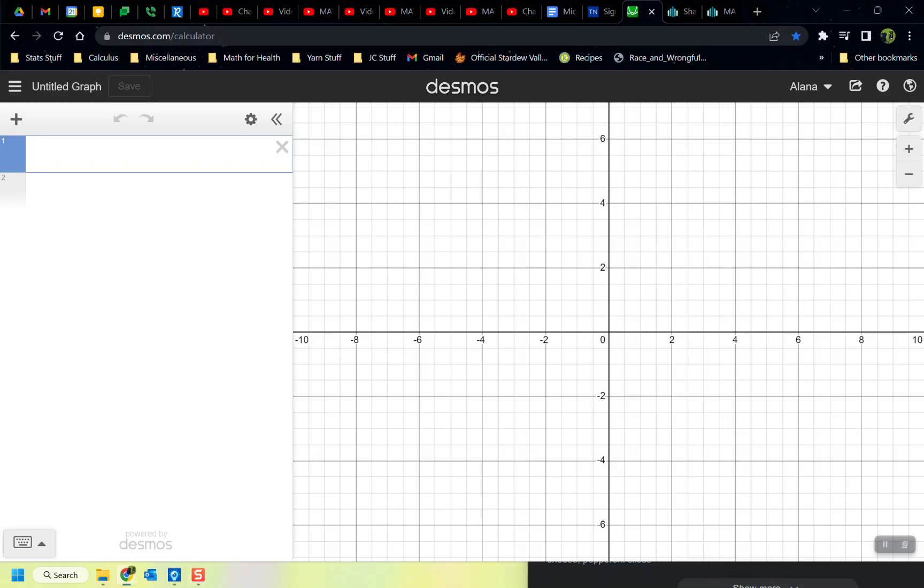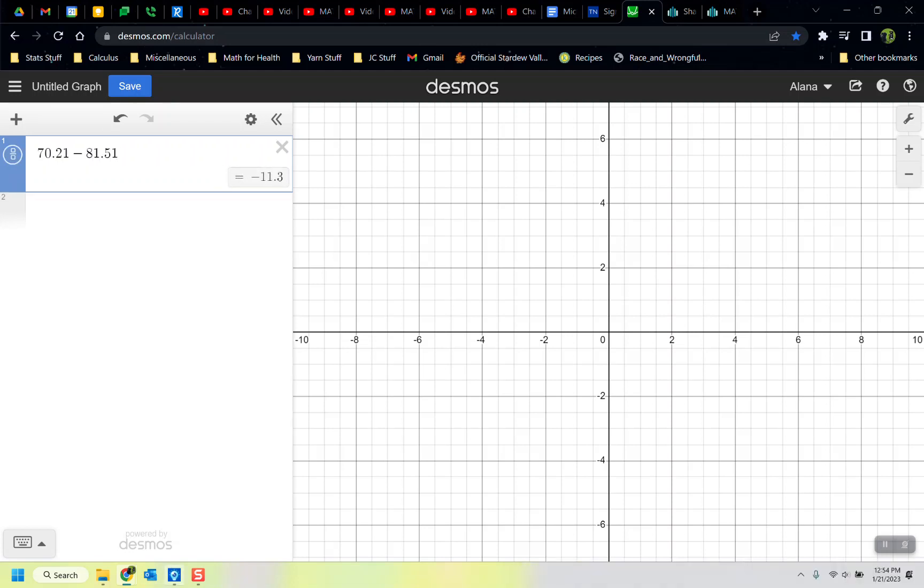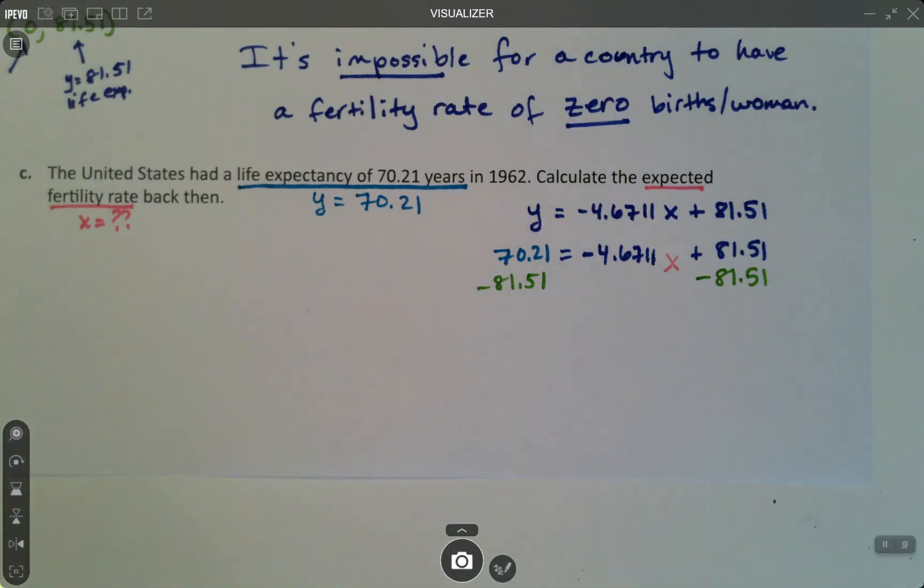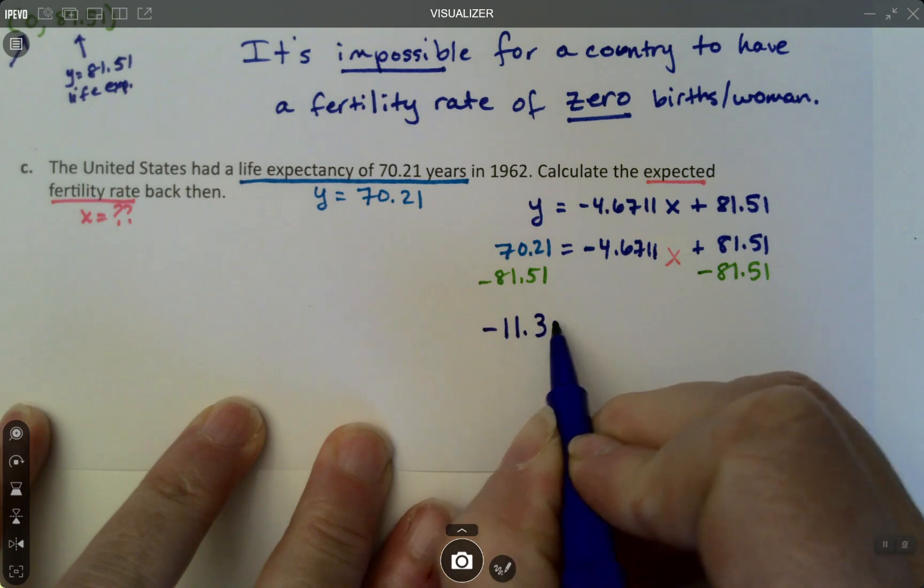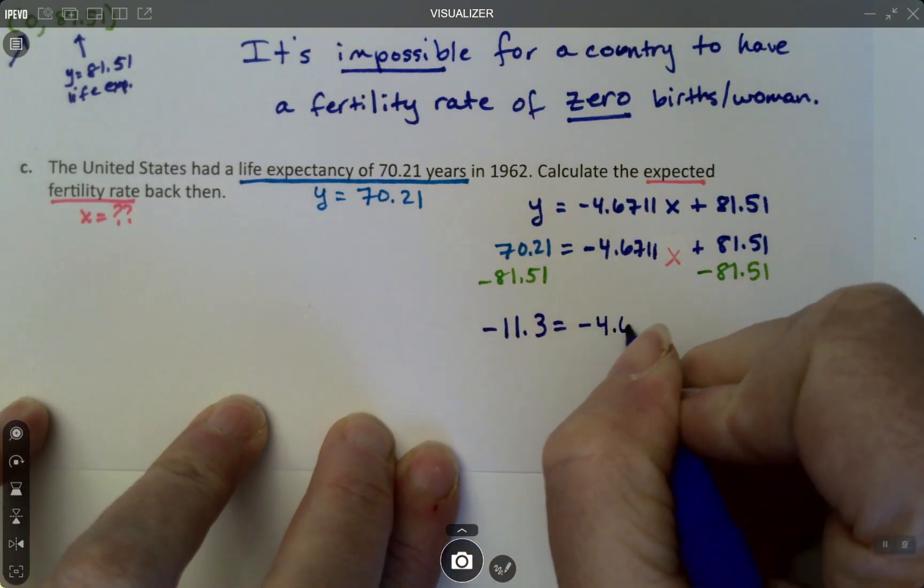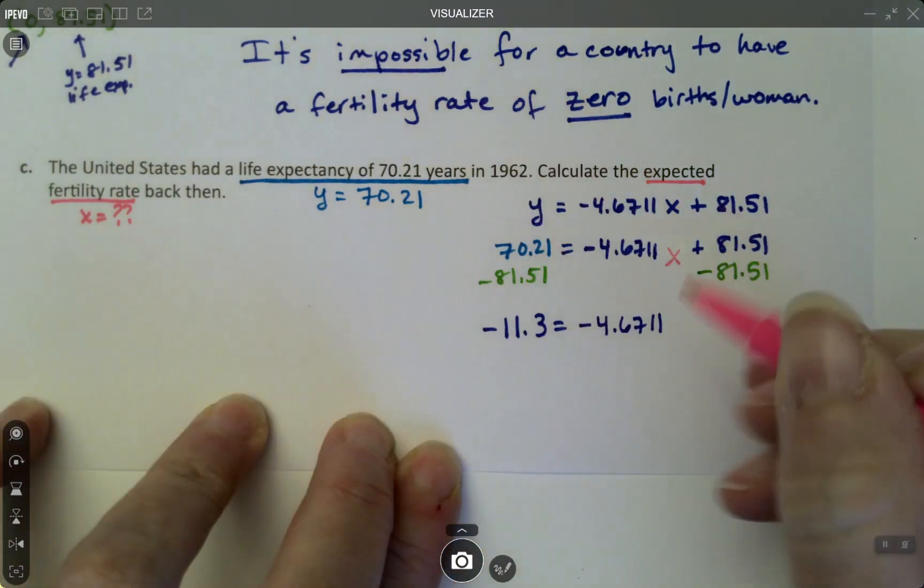All right. So in Desmos, I'm going to type 70.21, take away 81.51. And I get negative 11.3. Okay. So then these two values become negative 11.3.